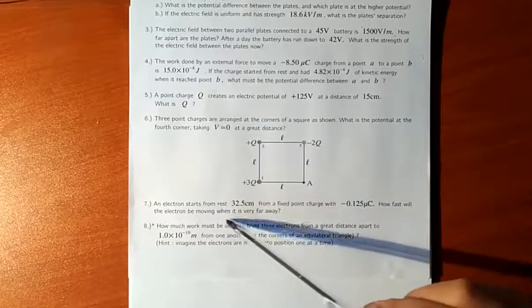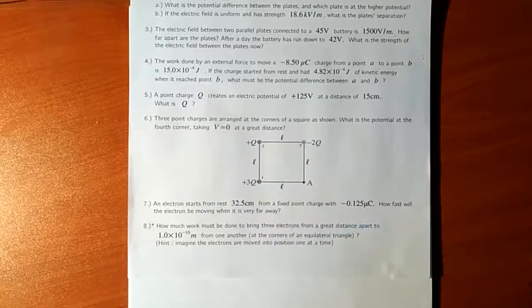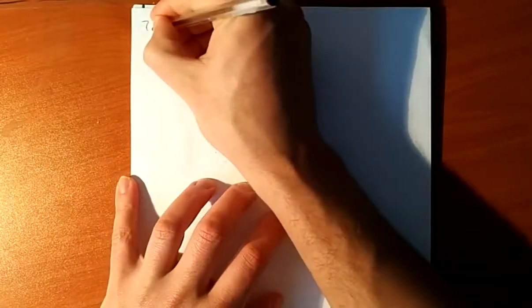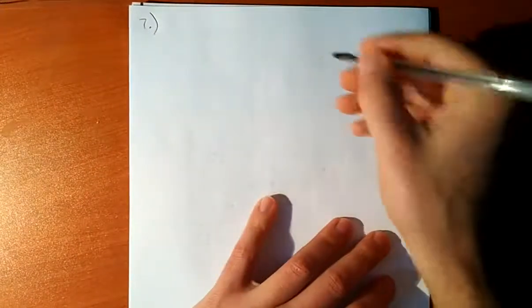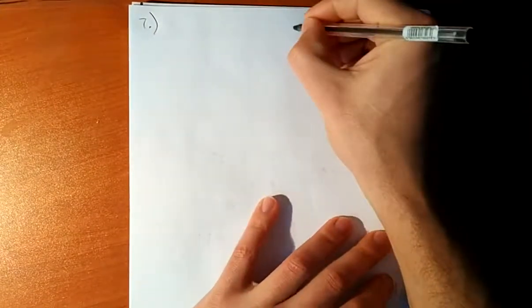How fast will the electron be moving when it is very far away? Okay, so number 7. To understand this, let's make a little sketch of what's going on.